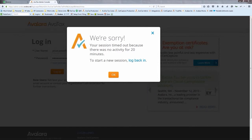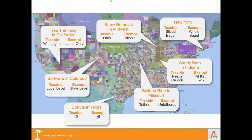For example, candy bars in Indiana: a Nestle Crunch is taxable but a Kit Kat or Twix is not — one ingredient difference, one had flour and one didn't. Go for a balloon ride in Missouri: cut the tether and you'll save money on tax. Software is only taxed at the local level in California — Boulder County taxes it, but the state does not. In New York, shoes sold for $100 are not taxable, but at $110 they are. Every state has control over what is and is not taxable.